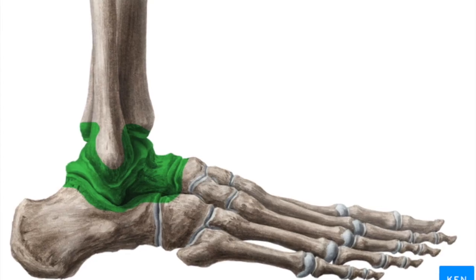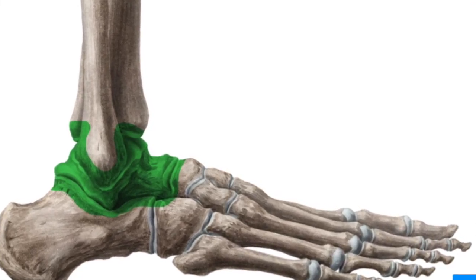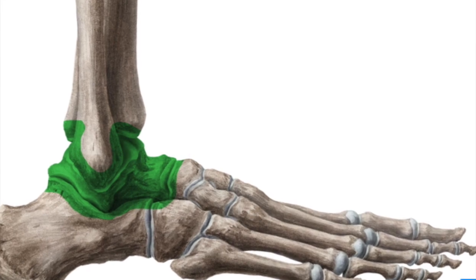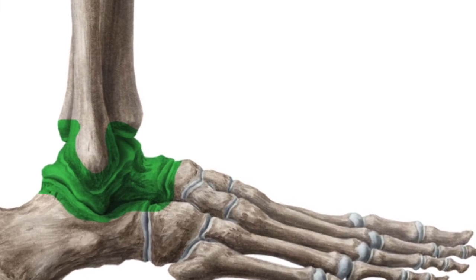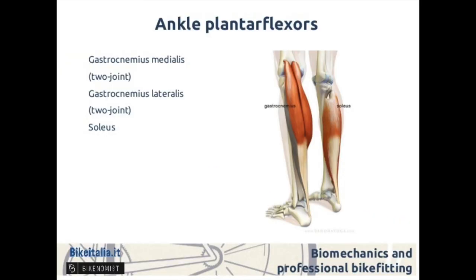The ankle joint is more affected by the manipulation of the mechanics of cycling compared to the hip and knee joints. The control of the plantar flexor muscle's length has been suggested as an attempt to maximize muscle power production through ankle rigidity, enhancing the force transfer from shank to crank.